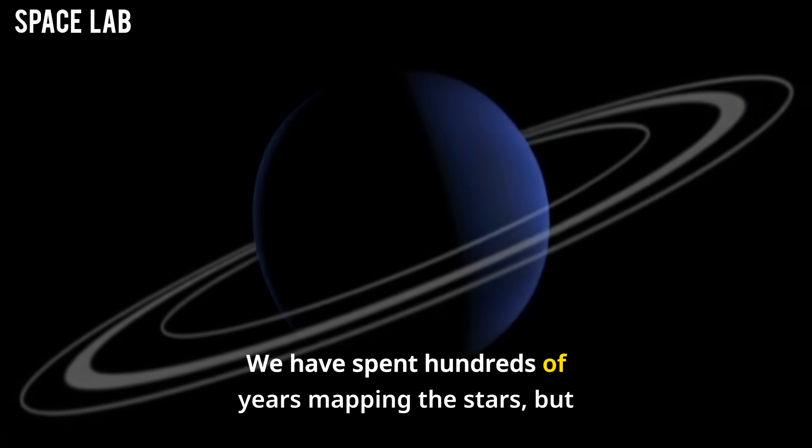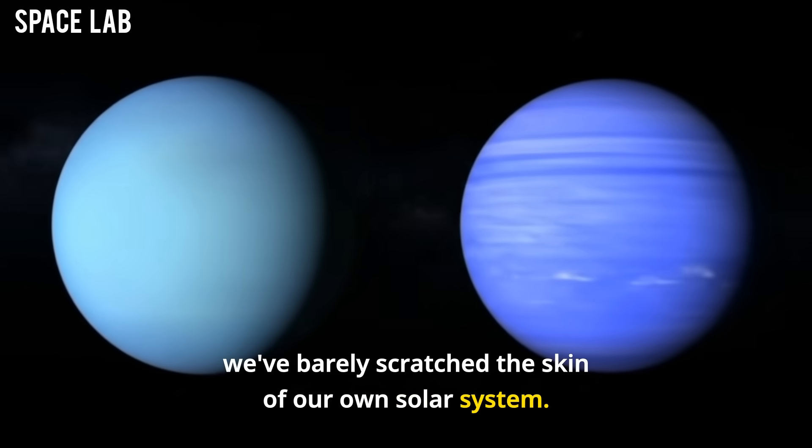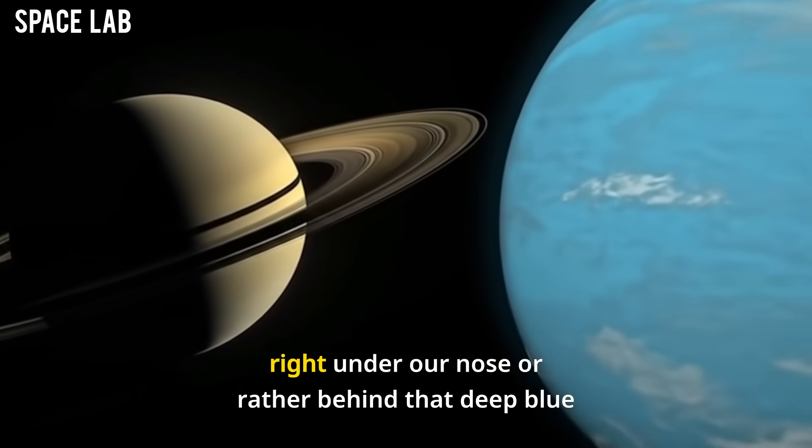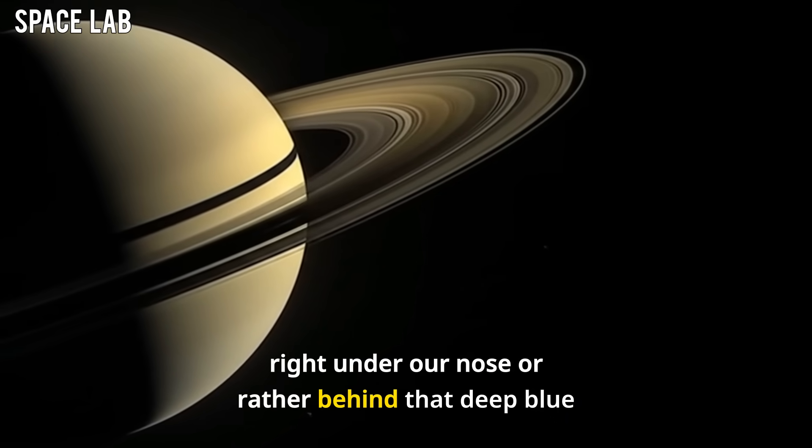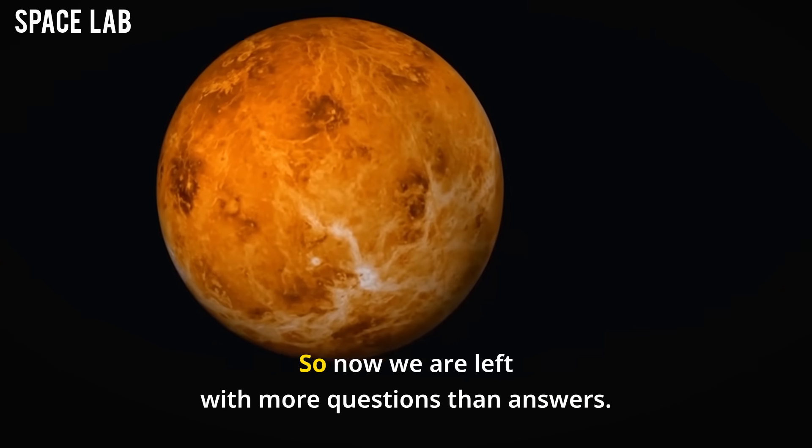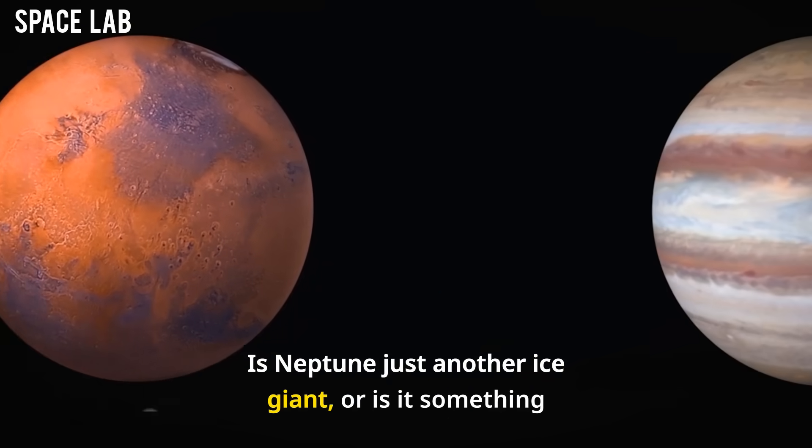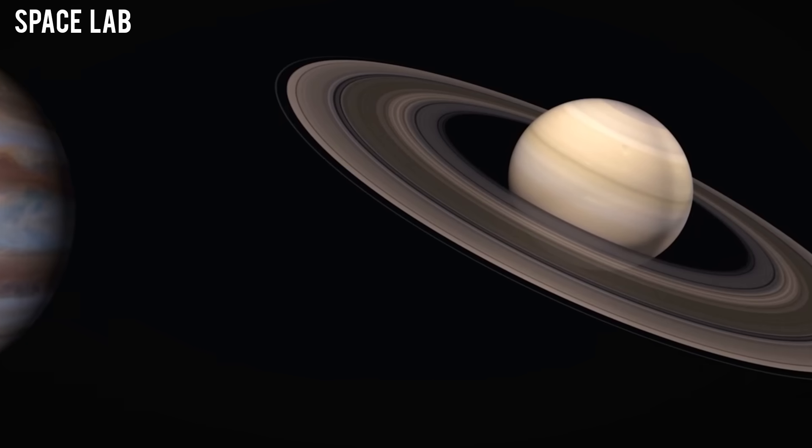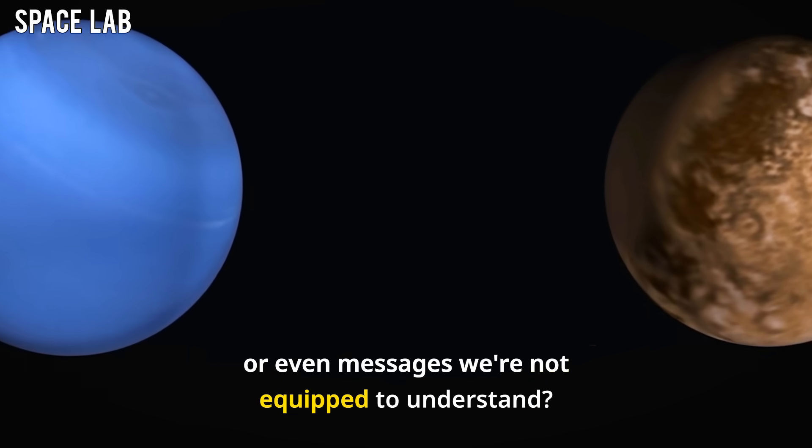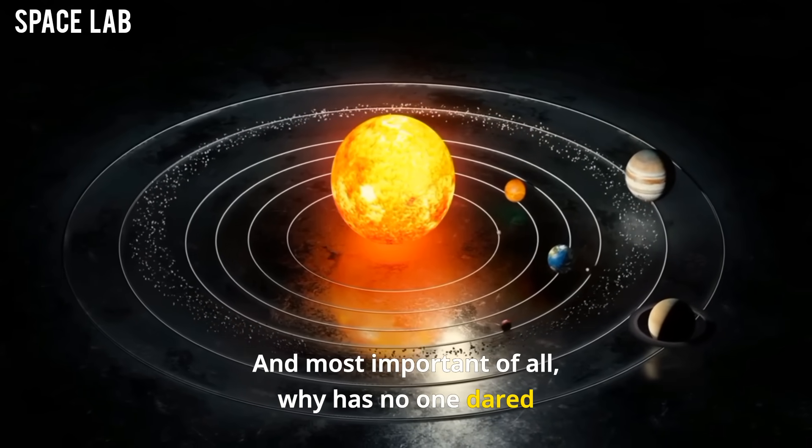We have spent hundreds of years mapping the stars, but we've barely scratched the skin of our own solar system. What if the real message, the real mystery, was sitting right under our nose, or rather, behind that deep blue haze of Neptune, silently waiting? So now, we are left with more questions than answers. Is Neptune just another ice giant, or is it something else entirely? Has it been hiding a secret energy, an unknown core, or even messages we're not equipped to understand? And most important of all, why has no one dared to go back?